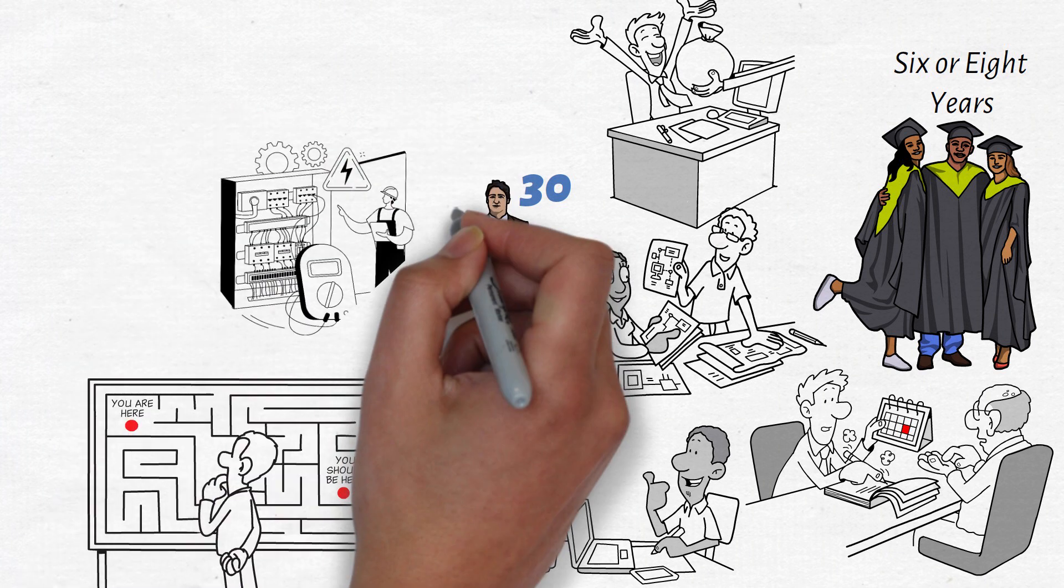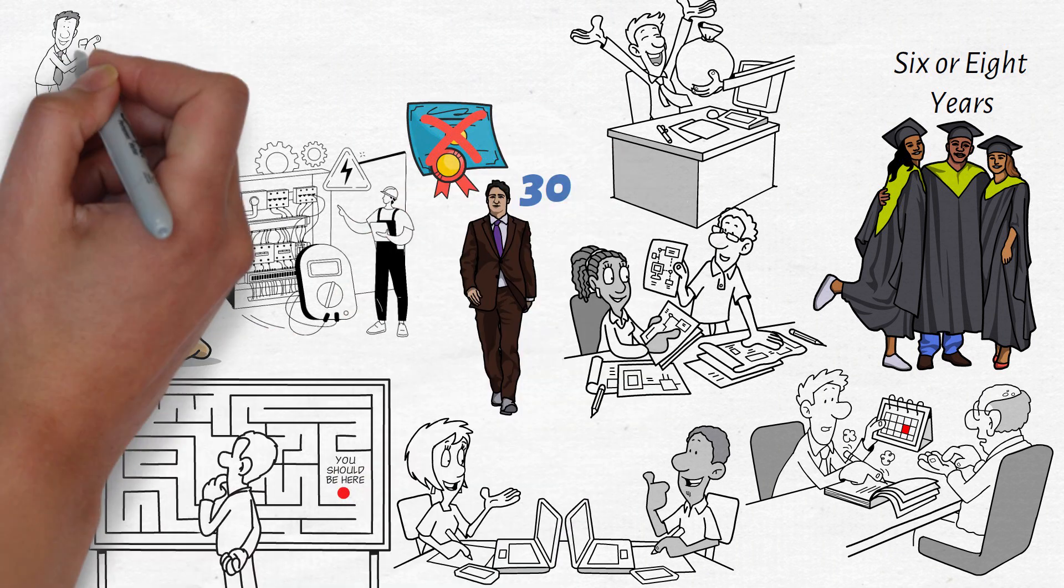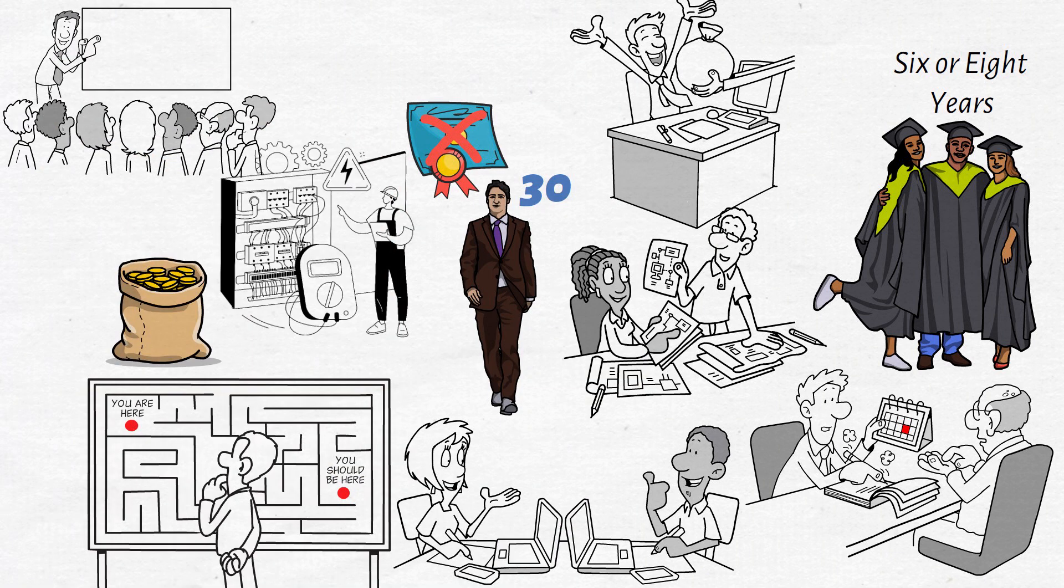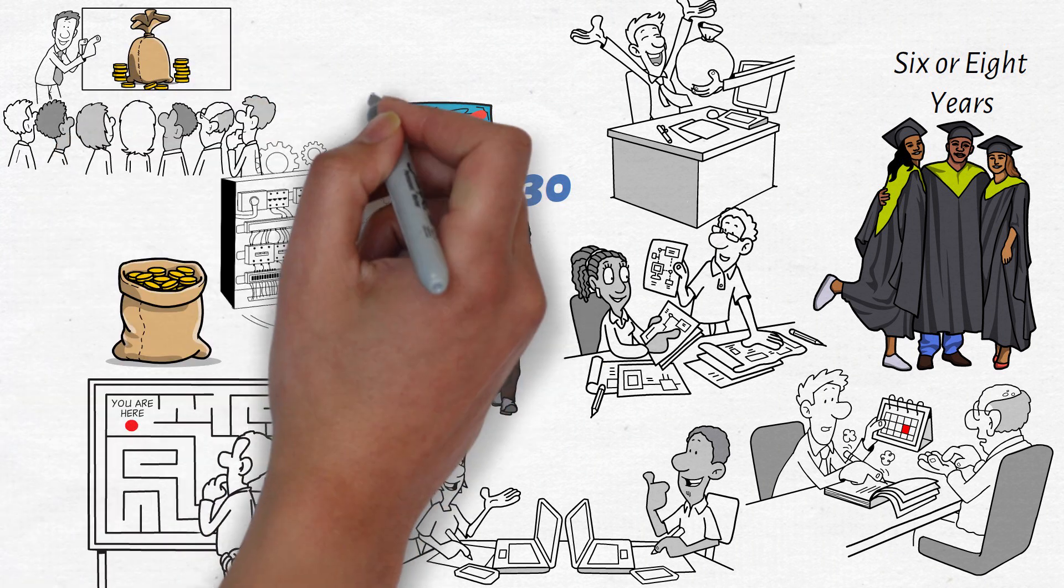For example, an electrician is one of the highest-paying jobs without a degree. They do have a period of training and licensing, but it isn't that long, and they can begin earning a healthy income in this short period of time.